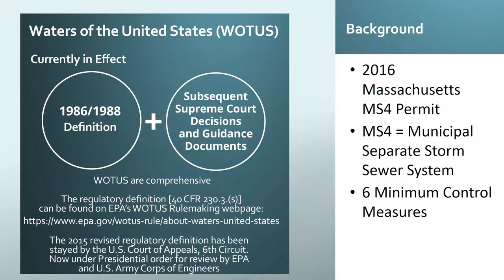According to the EPA's website, the definition of waters of the United States currently in effect is the definition promulgated in 1986-1988, implemented consistent with subsequent Supreme Court decisions and guidance documents. The 2015 revised regulatory definition of waters of the United States has been stayed by the U.S. Court of Appeals for the Sixth Circuit. In response to this stay, EPA, Department of Army, and Army Corps of Engineers resumed nationwide use of the agency's prior regulations. On February 28, 2017, the President issued an executive order directing EPA and Department of the Army to review and rescind or revise the 2015 rule.